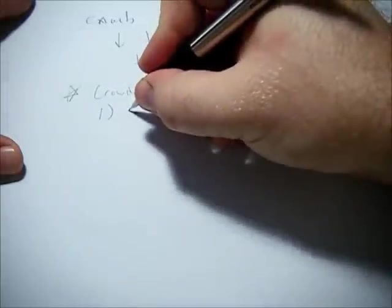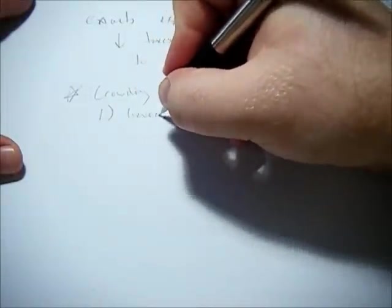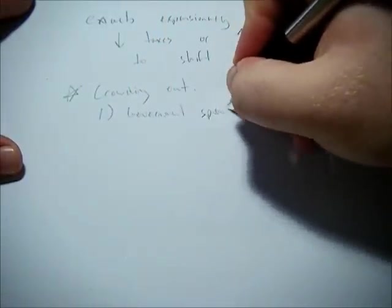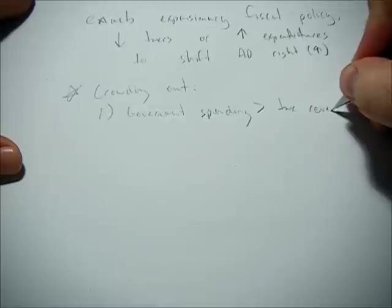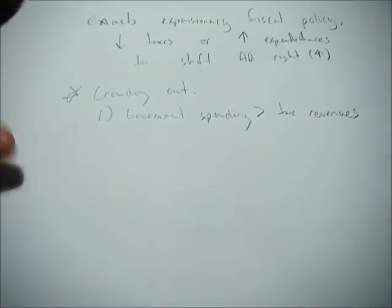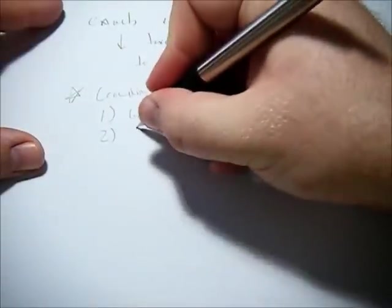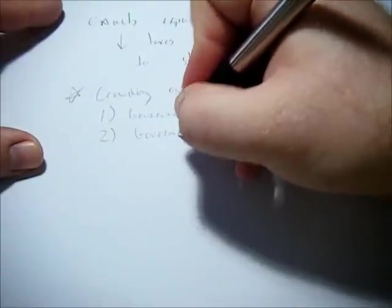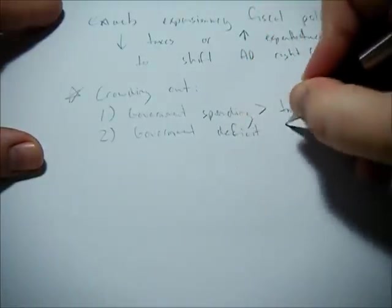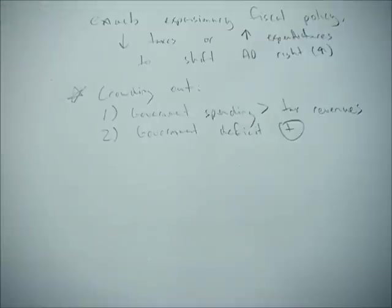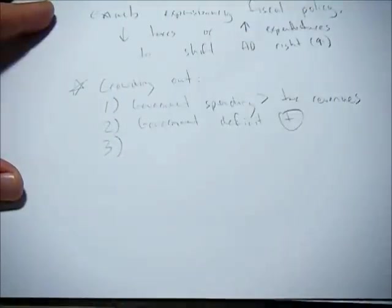First, government spending becomes greater than tax revenues. Assuming that we were in balance beforehand, this means that the government deficit becomes positive. So they have to get that money from somewhere in order to spend it or lower taxes.